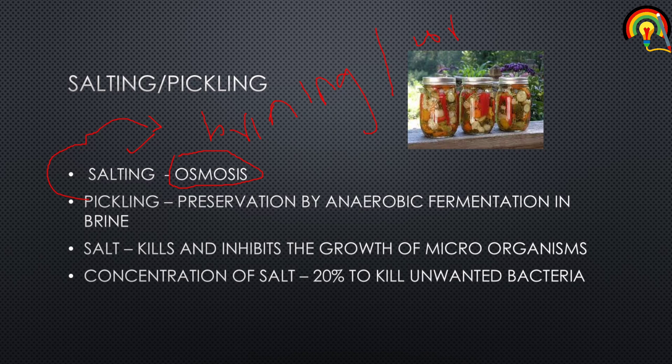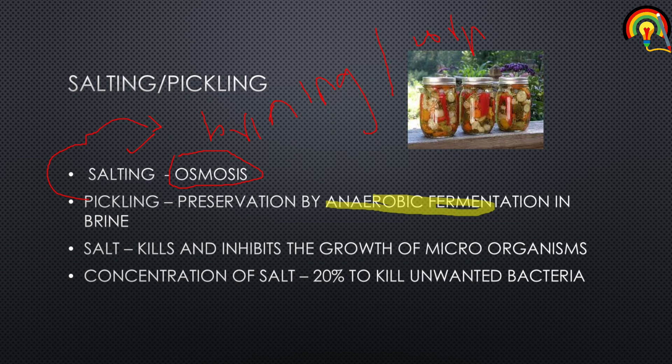Pickling is a process of preserving food by anaerobic fermentation. This anaerobic fermentation takes place in brine, which is nothing but a solution of salt in water. When anaerobic fermentation takes place, lactic acid is produced. This helps in marinating and also extends the shelf life of the product.